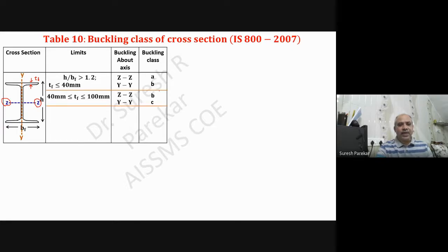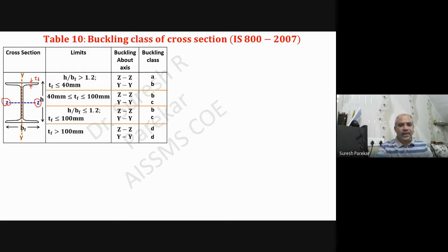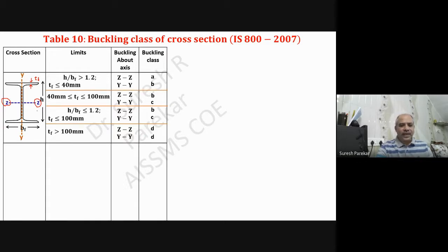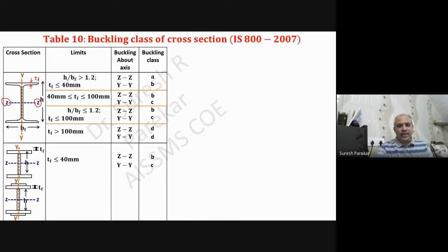If tf is between 40 and 100 mm, buckling about ZZ gives class B and about YY gives class C. For h/bf less than or equal to 1.2 with tf less than or equal to 100 mm, ZZ gives class B and YY gives class C. For tf greater than 100 mm, both ZZ and YY give buckling class D. These are for rolled sections.